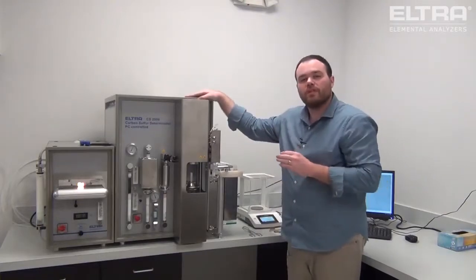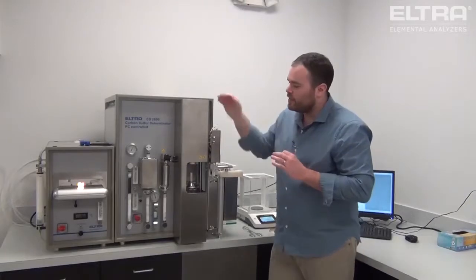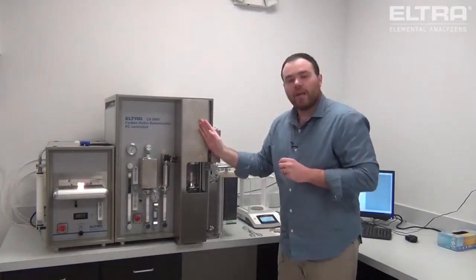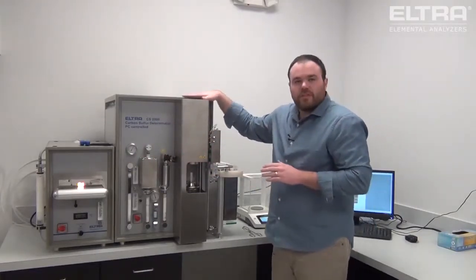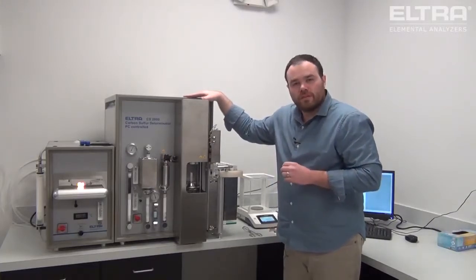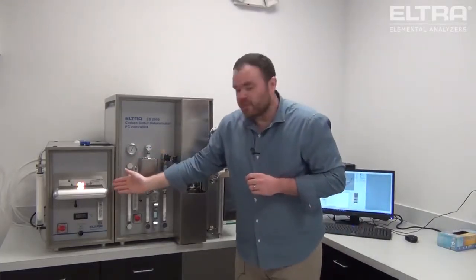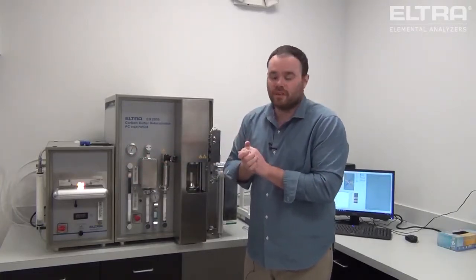The CS-2000 is identical to the CS-800 with the addition of the resistance furnace, which gives us the capability of running inorganic and organic samples. The induction furnace here is capable of temperatures greater than 2,000 degrees Celsius, and the resistance furnace is capable of temperatures of up to 1550 degrees Celsius.